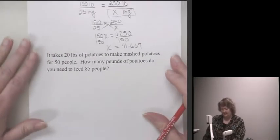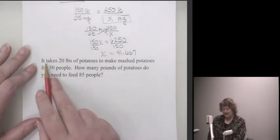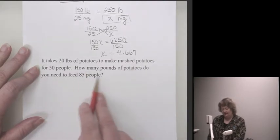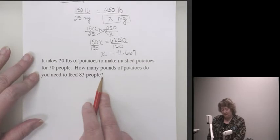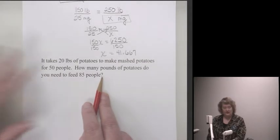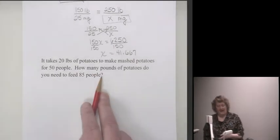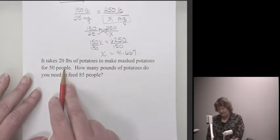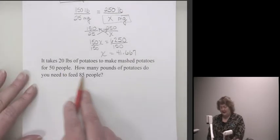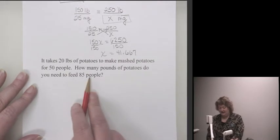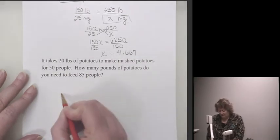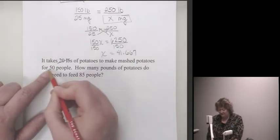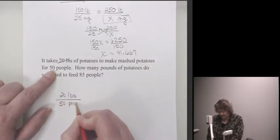Let's look at our second example. It says it takes 20 pounds of potatoes to make mashed potatoes for 50 people. How many pounds of potatoes do you need to feed 85 people? As I look at this problem, I want to stop and think and read it through first. Notice I always read through the problem first. Then I'm going to go back and say, well, I've got a ratio problem. How do I know that? Because I have 20 pounds to 50 people. Another word for four is two. And it says, how many pounds of potatoes do I need to feed for 85 people?